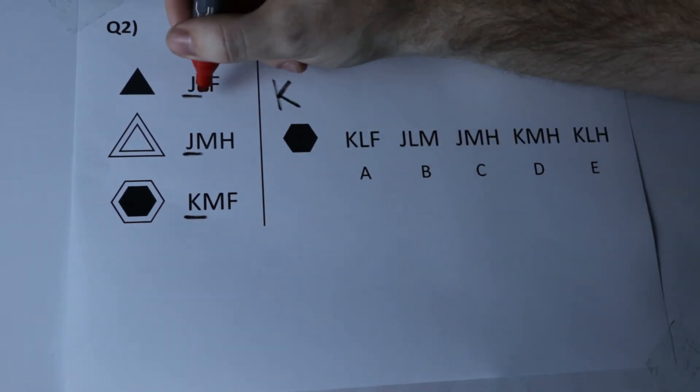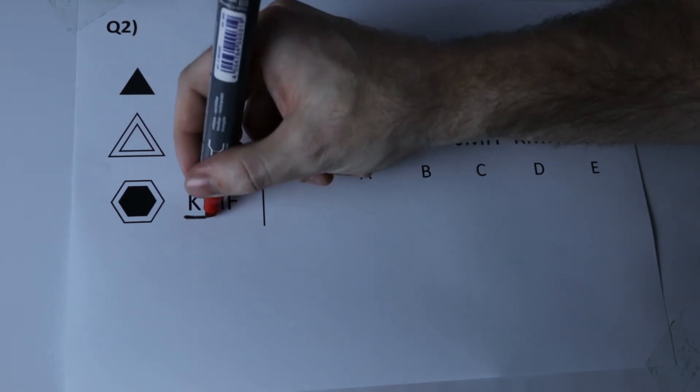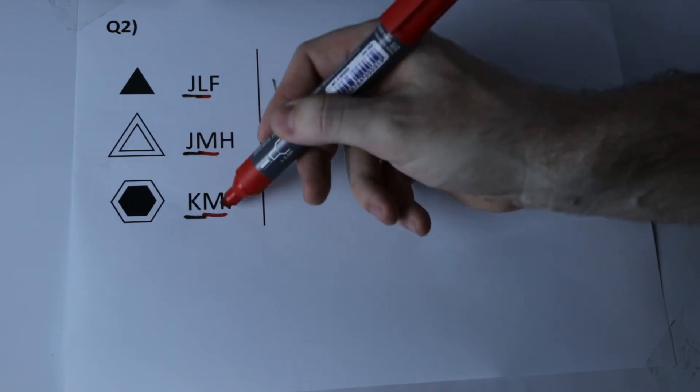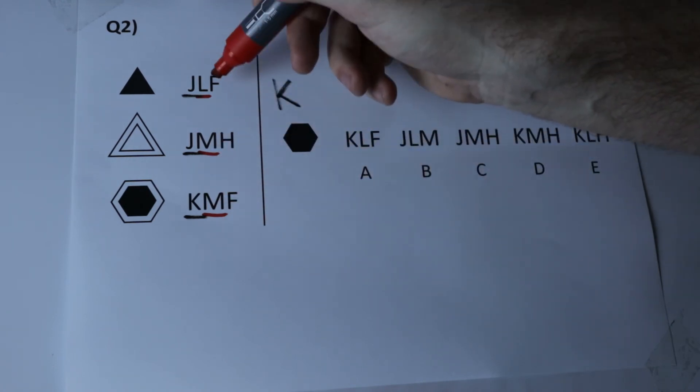Moving on to the second letter that we can isolate here, L, M and M, we ask ourselves the same question. What's the same about the M letters that's different about the L letter?